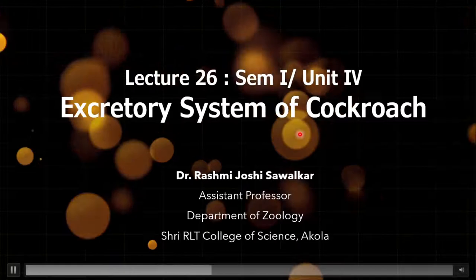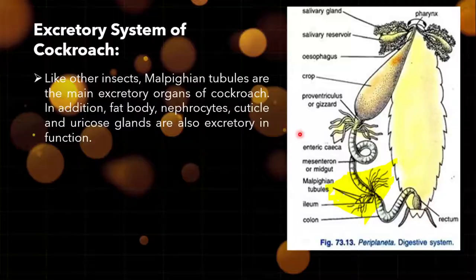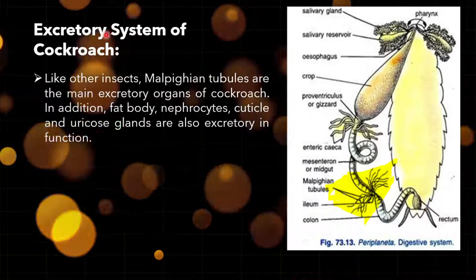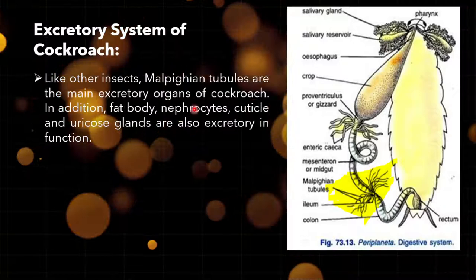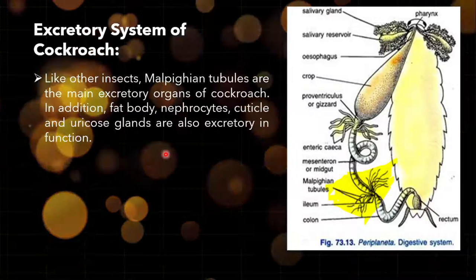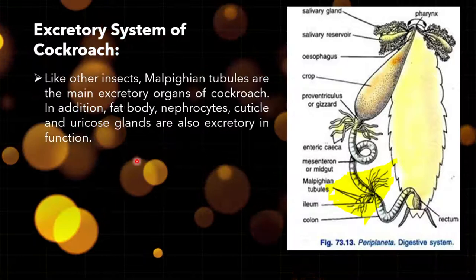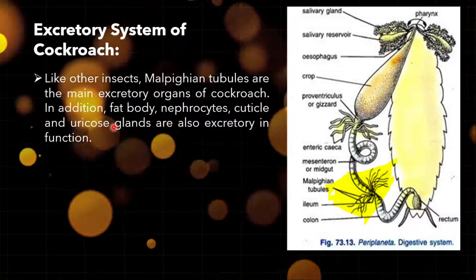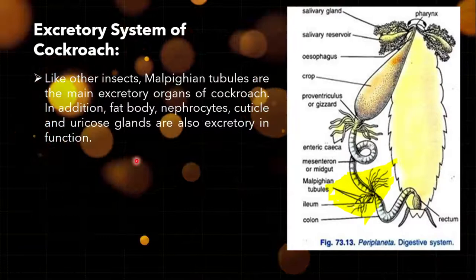There is no separate note on the excretory system of cockroach — I just want you to know which are the excretory organs and how the excretory system functions. Like other insects, Malpighian tubules are the main excretory organs of cockroach. In addition, fat body, nephrocytes, cuticle, and uricose glands are also excretory in function.